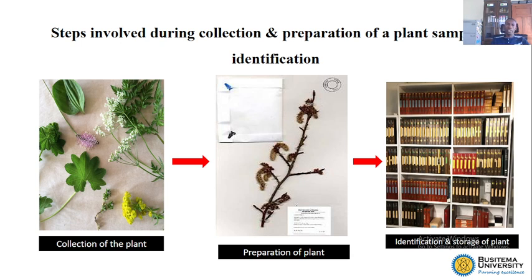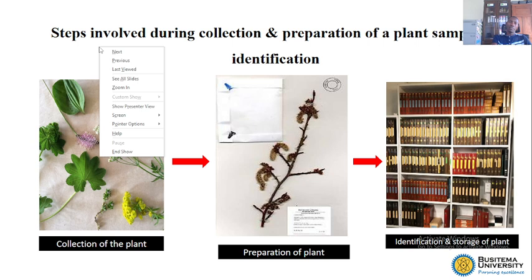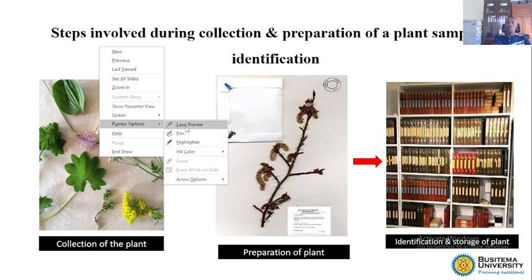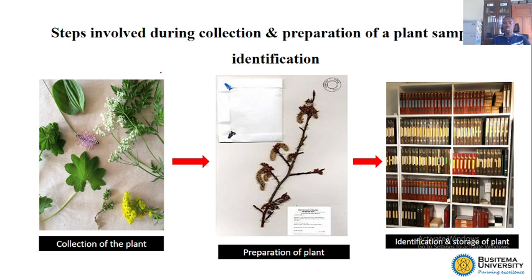The steps involved during collection and preparation of a particular plant for identification are basically five steps. Once you conduct your ethnobotanical survey — meaning when you survey particular communities to find out which drugs they use to treat various diseases — you must follow these steps to prepare that plant for identification.